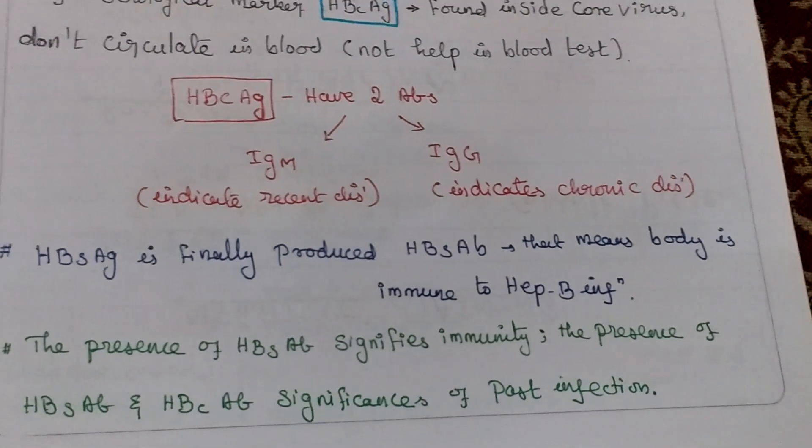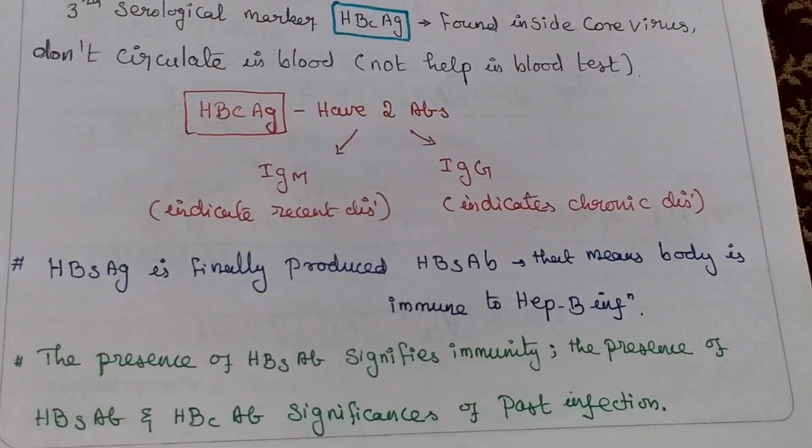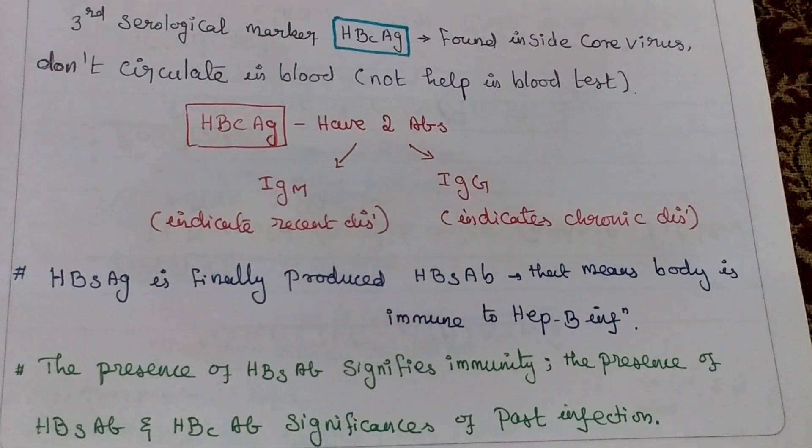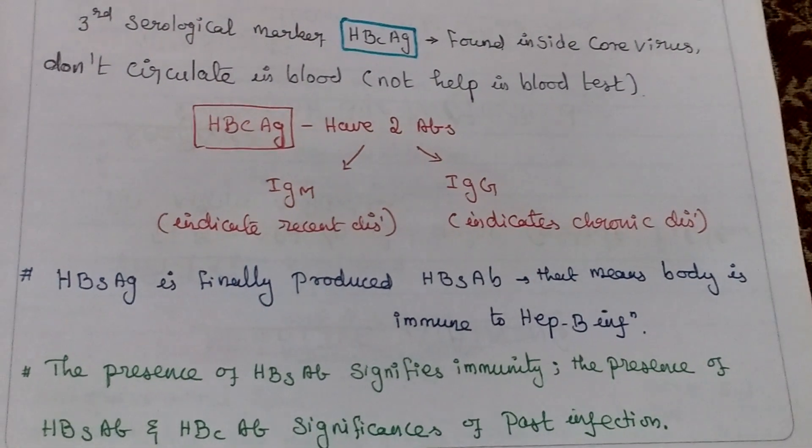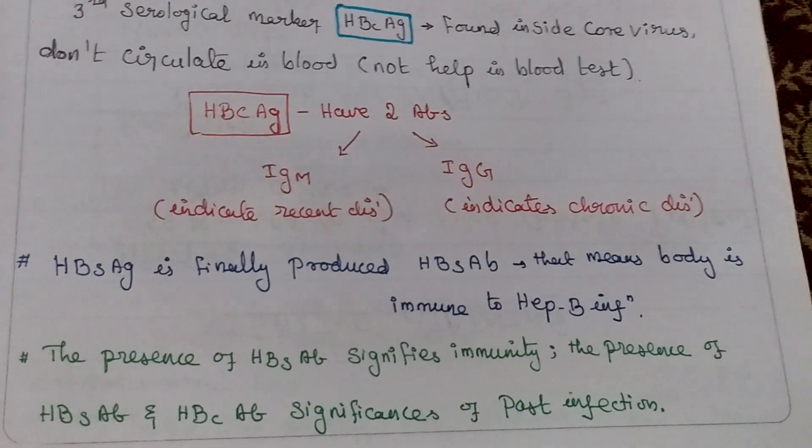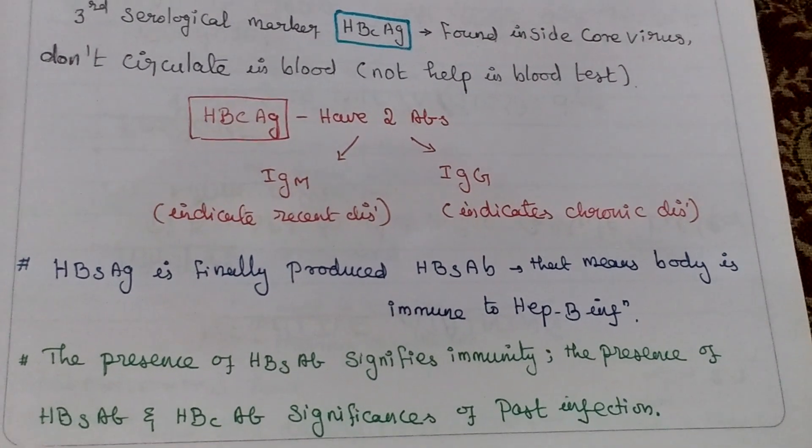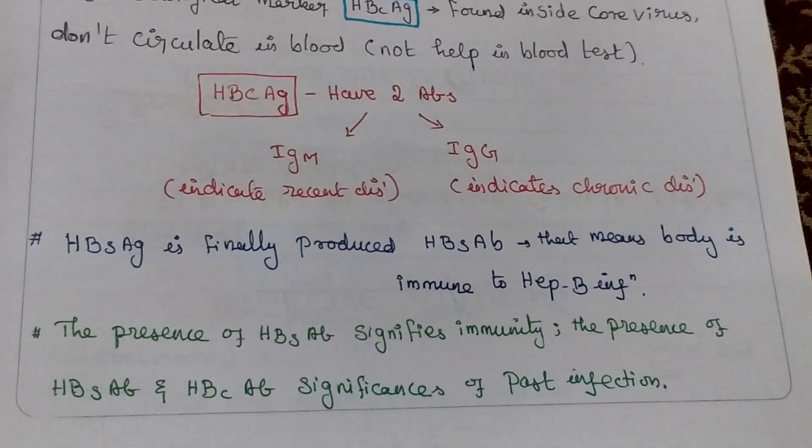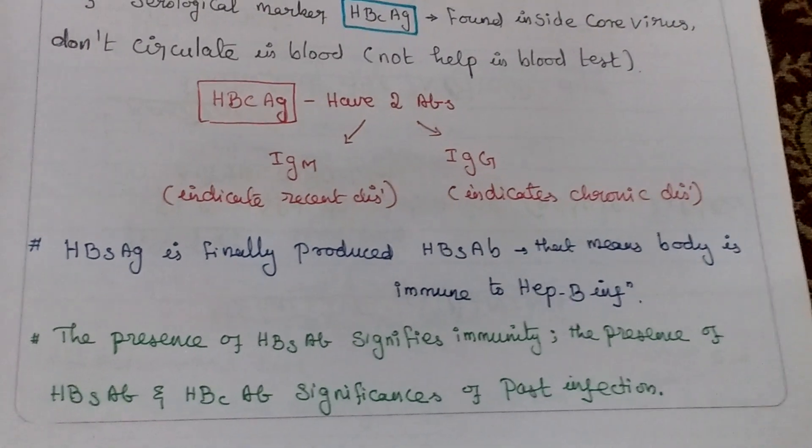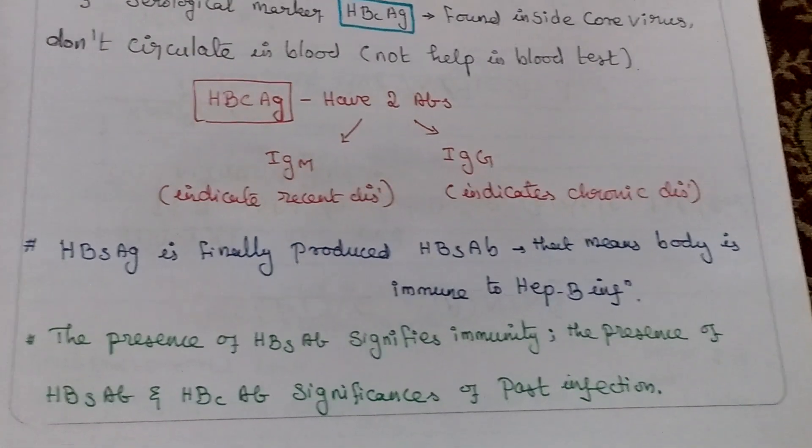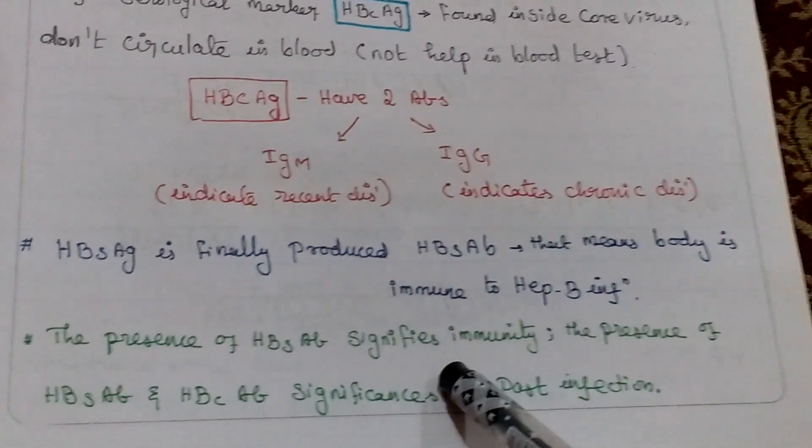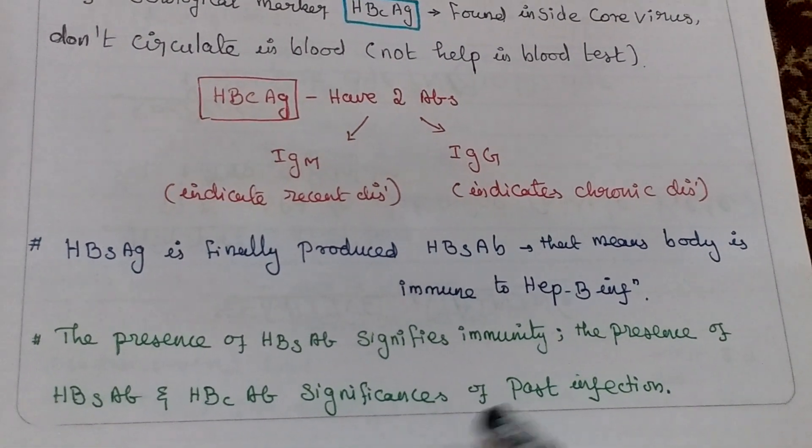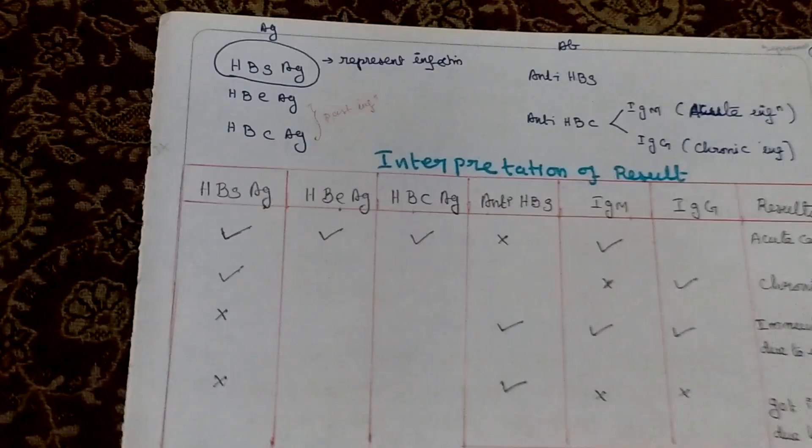HBsAg finally produces HBsAb antibody, meaning the body immune system has immunity to HBV infection. The presence of HBsAb indicates immunity. The presence of HBsAb and HBcAb indicates past infection. S indicates immunity, S and C indicate past infection.